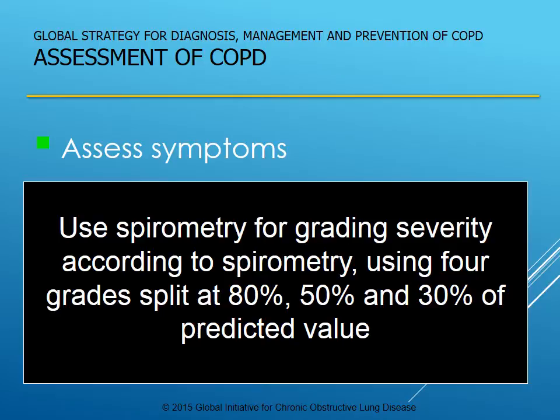We know that we diagnose COPD with an FEV1/FVC ratio. But then to grade it and decide our medication choices, we put it into four grade splits based on severity — and that's going to be at 80, 50, and 30.